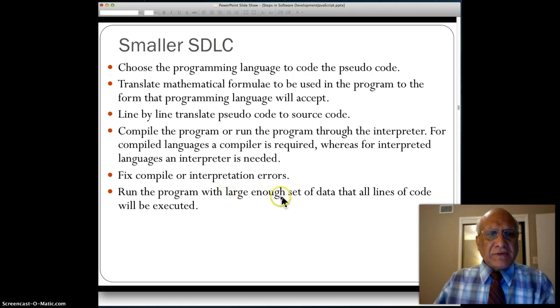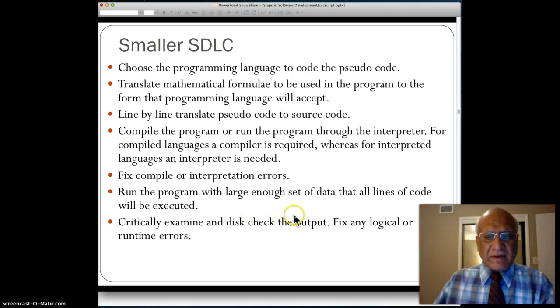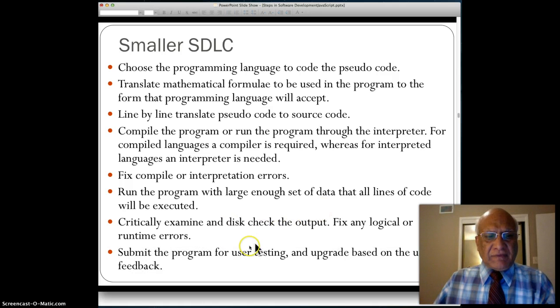Then you need to run the program with large enough data sets that all lines of code are executed. Then critically examine the output for each set of data - that's called desk checking. You have to fix any logical or runtime errors. Finally, submit the program for user testing. Companies call that beta testing. Then based on the testing response, you'll have to upgrade parts of the source code and parts of the program.